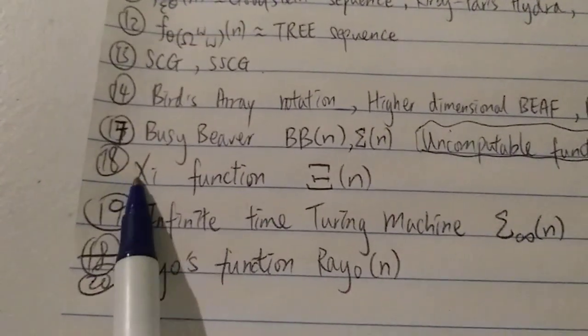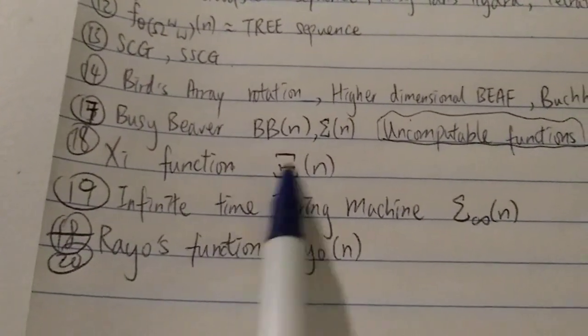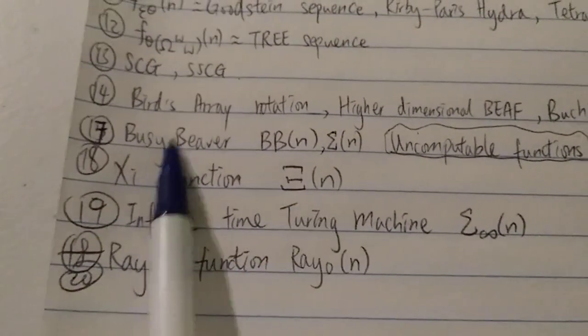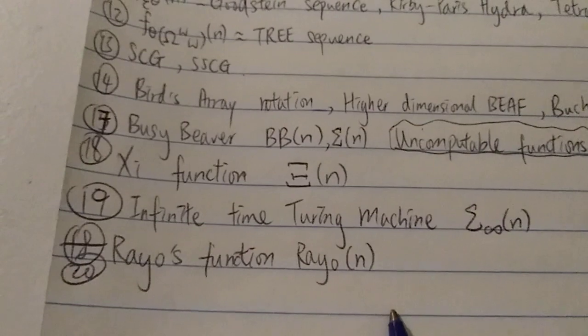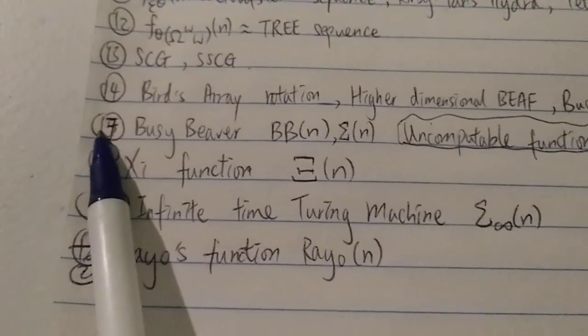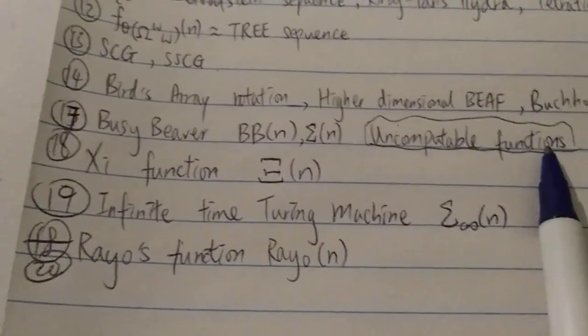And 18, we have the Xi function, which has this notation over here. This one grows even faster than the basic busy beaver. Again, everything here beyond level 17 is uncomputable.